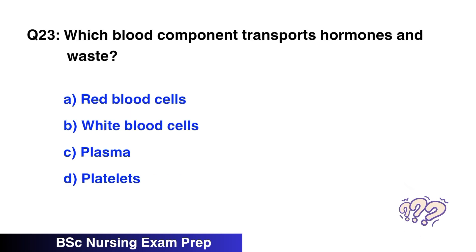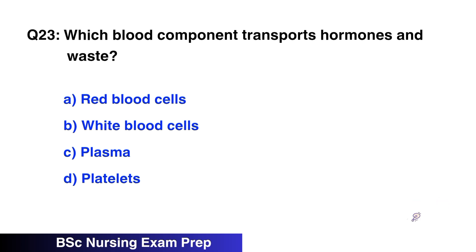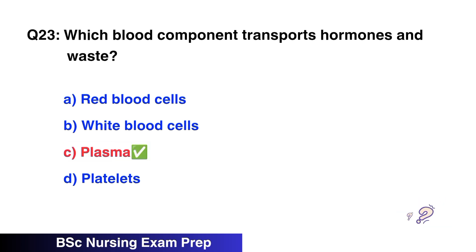Question number 23: Which blood components transport hormones? The right option is C, plasma. Question number 24: Which enzyme breaks down hydrogen peroxide in cells? The right option is B, catalase.